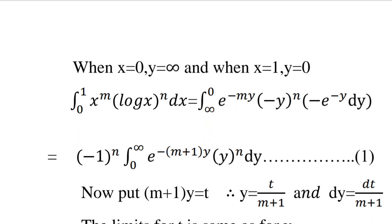Since minus y the whole raised to n equals minus 1 the whole raised to n times y raised to n, and applying the limits reversal property, we get minus 1 the whole raised to n times integral from 0 to infinity of e raised to minus of m plus 1 into y times y raised to n into dy. This is equation 1.